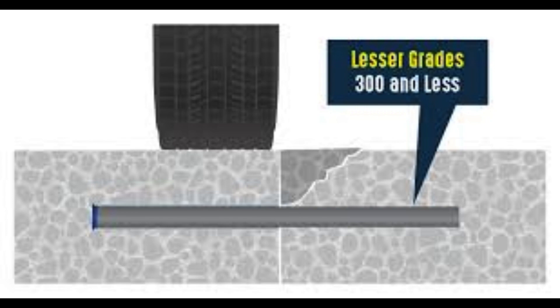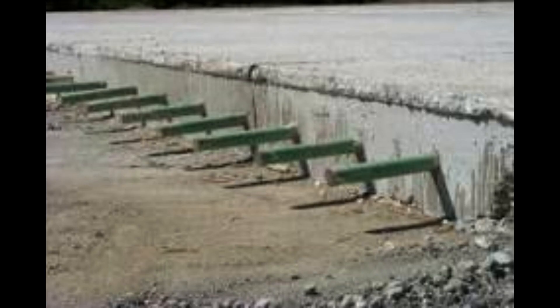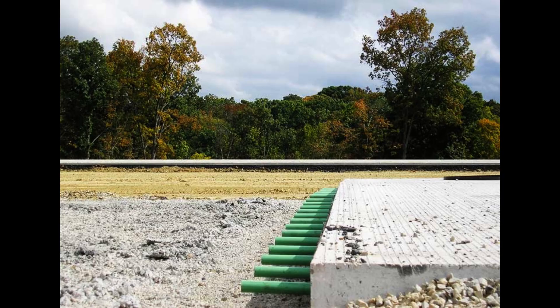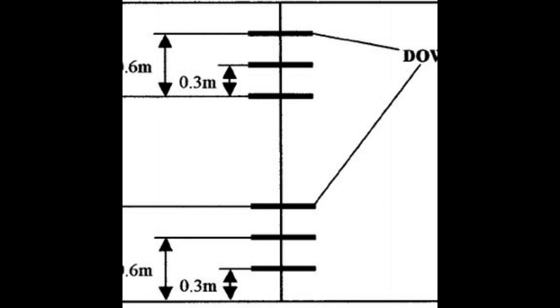What is the spacing for dowel bars in concrete pavement? Dowel bars are typically 32 to 38 millimeters (1.25 to 1.5 inches) in diameter, 460 millimeters (18 inches) long, and spaced 305 millimeters (12 inches) apart.